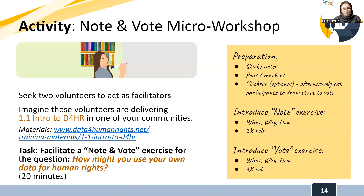The two volunteer facilitators will prepare with sticky notes and markers for everybody, as recommended in the video. The video recommends using stickers as part of the voting process, though you could also have participants draw stars or some kind of symbol. The facilitators need to guide both the note part — the sticky note writing — and then the voting part of the exercise, giving clear instructions for each. I want the two volunteer facilitators to practice giving those instructions using the two rules discussed in the previous video.